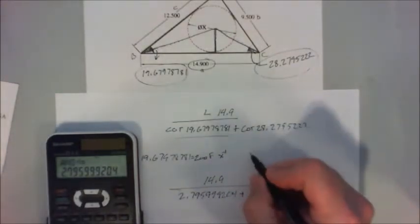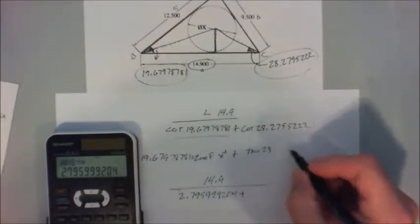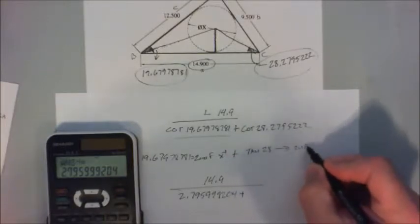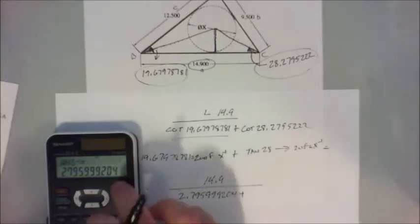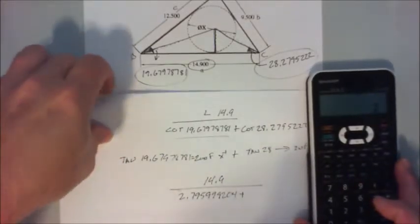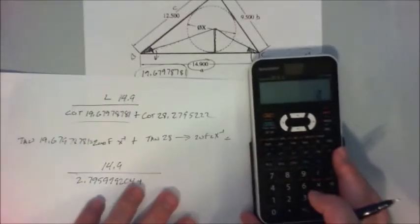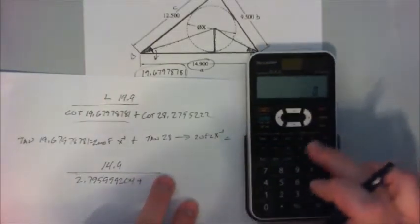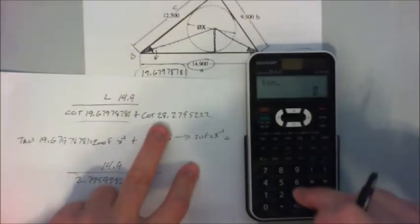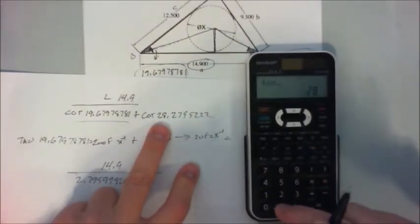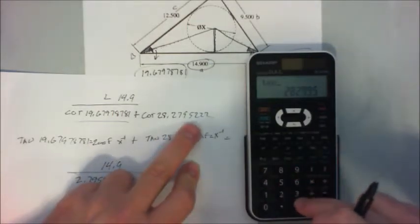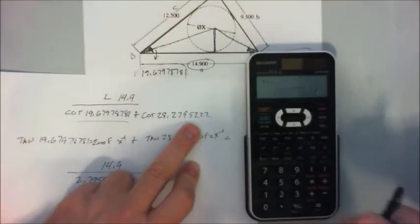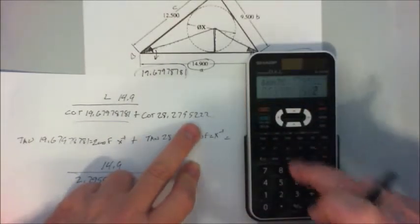Plus, I'm going to say tan 28.279522 equals, second function 1 over, equals 1.858792781.